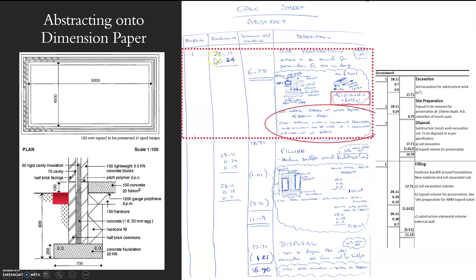So I've got my centre line, 28.11, and my width. So I've done a little drawing down there so you can see where I'm getting those values from. And I'm ending up with 6.75 meters squared. So I'm quite comfortable. I've got my site preparation.